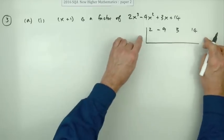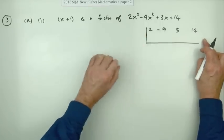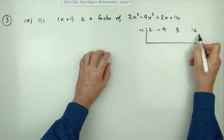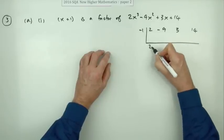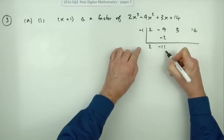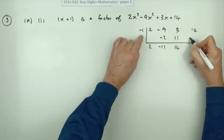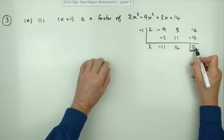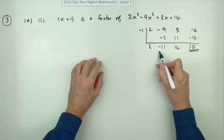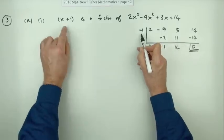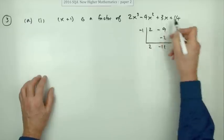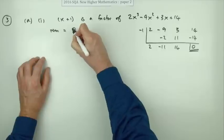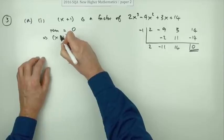You can do the division synthetically using an evaluation table. Put negative one into the table and rattle through: start with two, multiply by negative one, add them up, multiply by negative one, add them up, multiply by negative one. The result is the value of the expression at negative one, but it also doubles as the quotient when dividing by x plus one. A remainder of zero means x plus one is a factor.